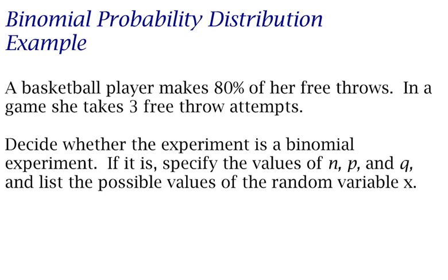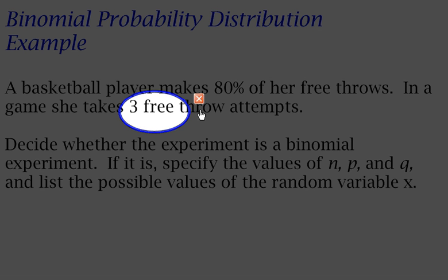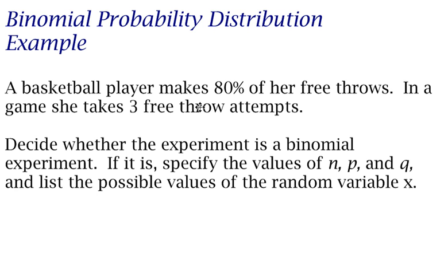The first thing is that there is a fixed number of trials. She's taking three free throws — it doesn't say that she takes free throws forever. So there's a fixed number of trials, and the first condition is satisfied.